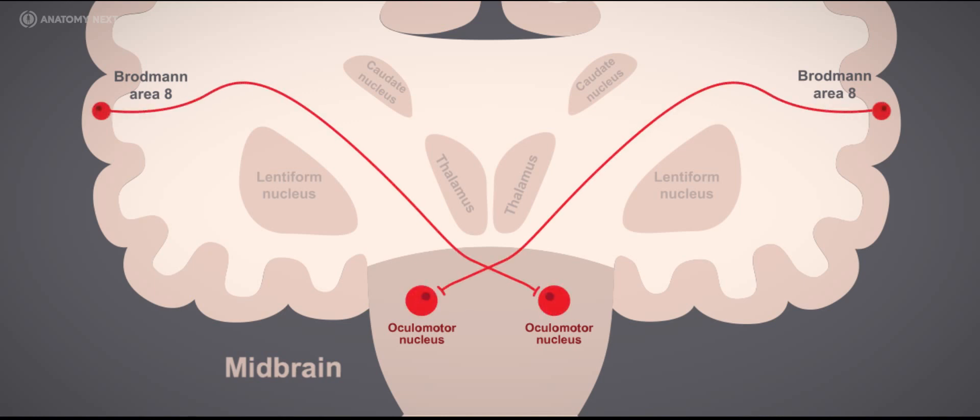The pathway from the cerebral cortex to the nuclei located in the brainstem is called the corticonuclear or the corticobulbar tract.